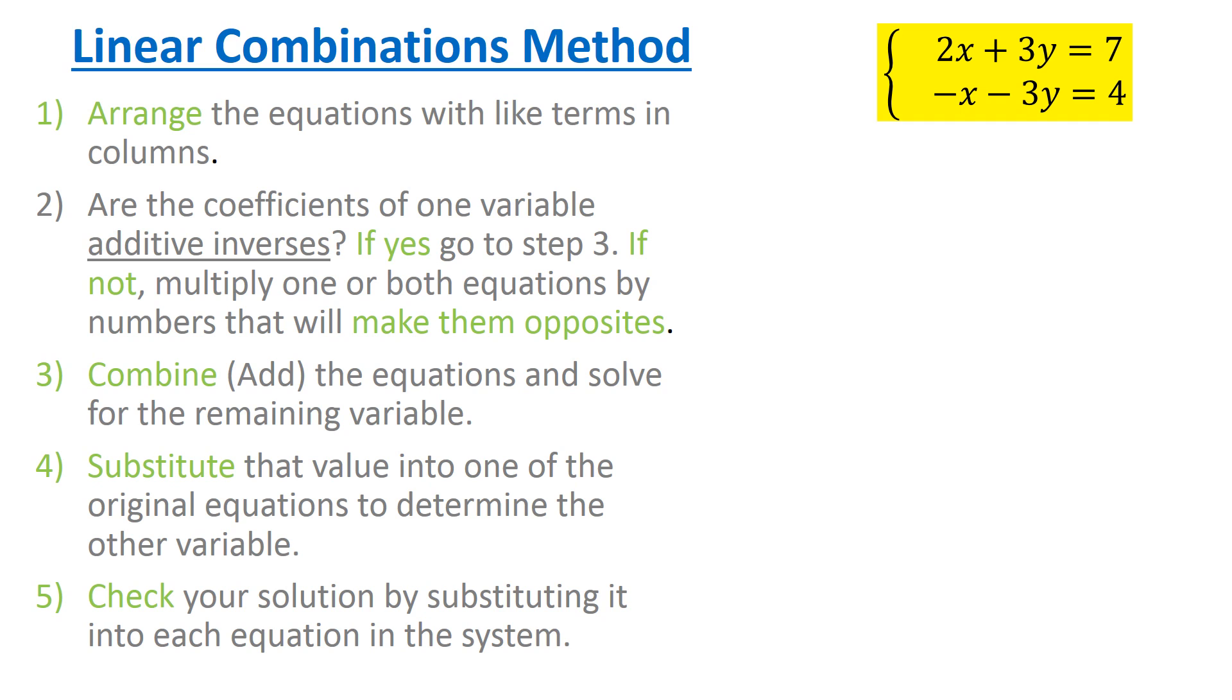Are the coefficients of one variable additive inverses? Well, 3y and negative 3y are additive inverses because when they're added, they give us zero. So we're going to go ahead and combine in step three, the equations and solve for the remaining variable. 2x minus x over here give us x and 7 plus 4 is 11. We solved for the x variable.